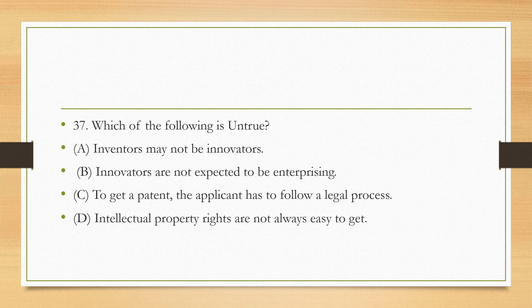Question seven: 'Which of the following is untrue?' Options: inventors may not be innovators; innovators are not expected to be enterprising; to get a patent, the applicant must follow a legal process; intellectual property rights are not always easy to get. Where you can't immediately get the answer, try excluding options. Option B — innovators are not expected to be enterprising — is actually untrue, because the very difference between inventors and innovators is that innovators are supposed to be enterprising. If you understood the passage, you don't even need to go back to find this answer. The answer is B.